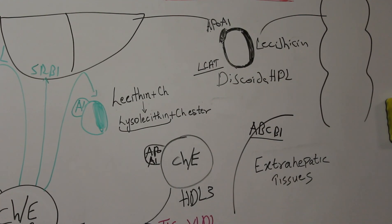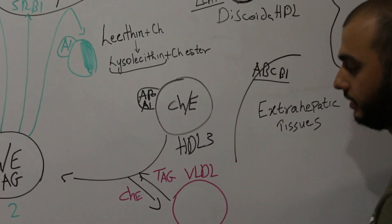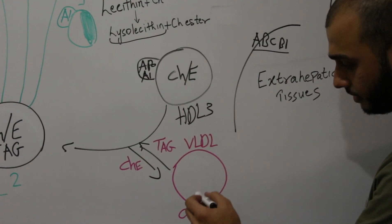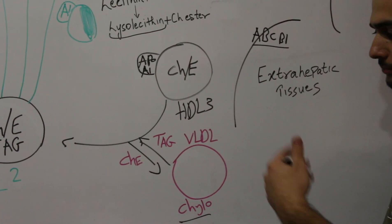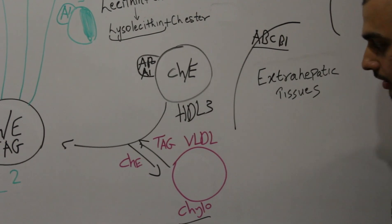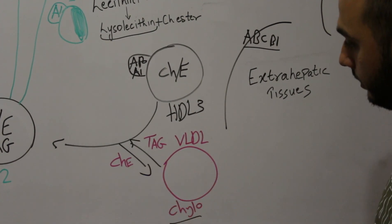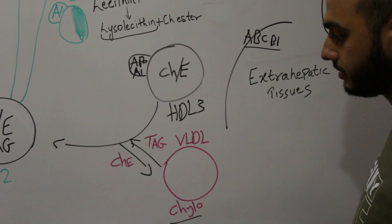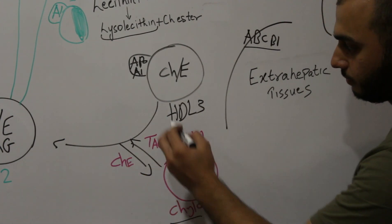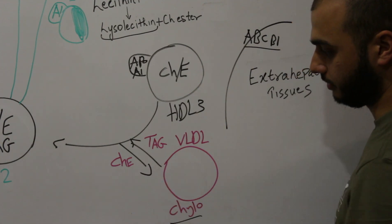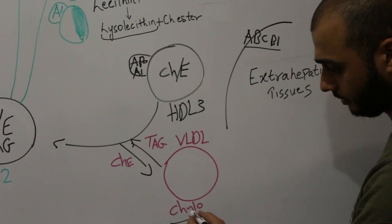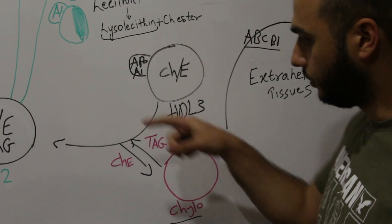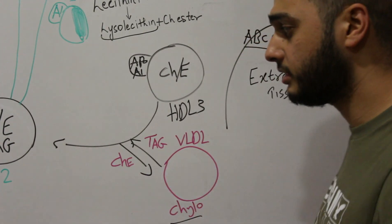When we discussed chylomicron and VLDL, we noted that HDL was throwing off some proteins while also exchanging lipids — HDL was throwing off cholesterol toward chylomicron and VLDL, and taking triacylglycerides in return.